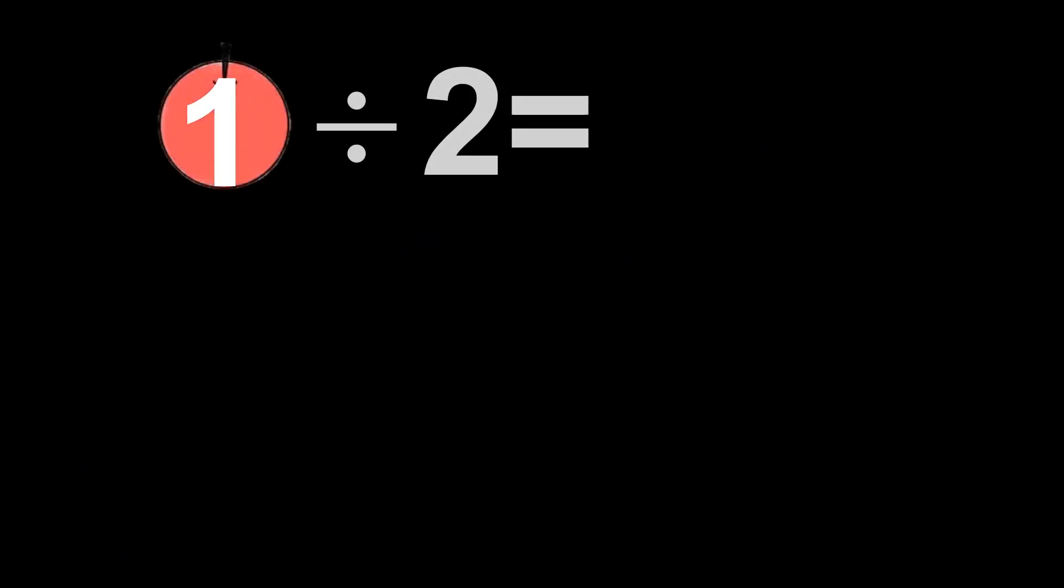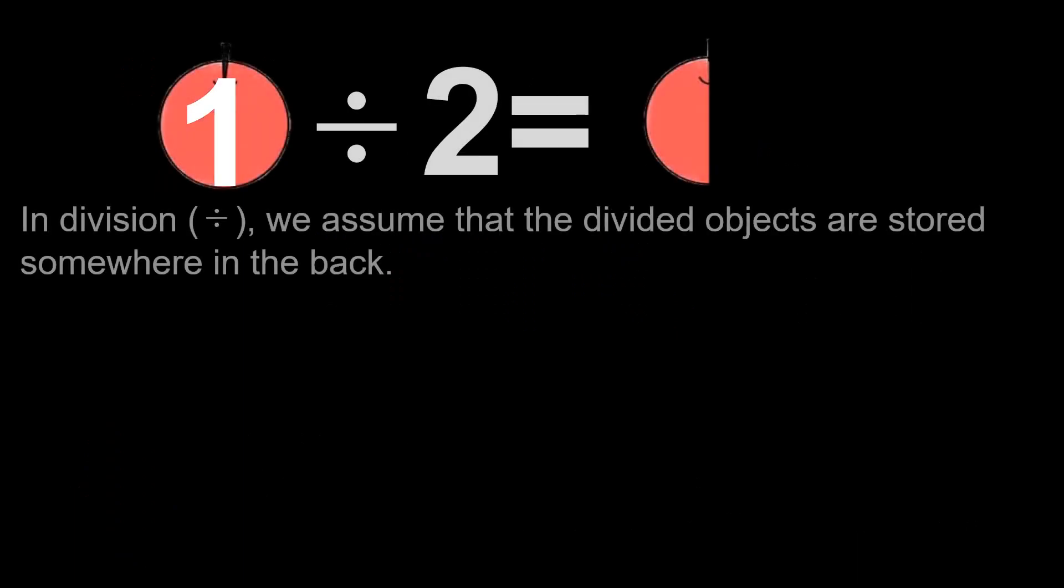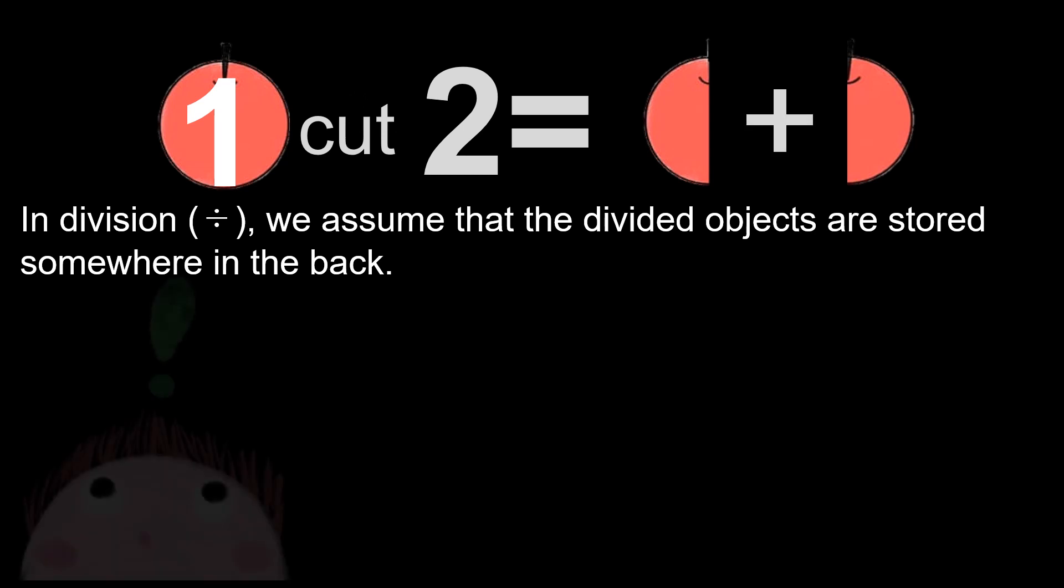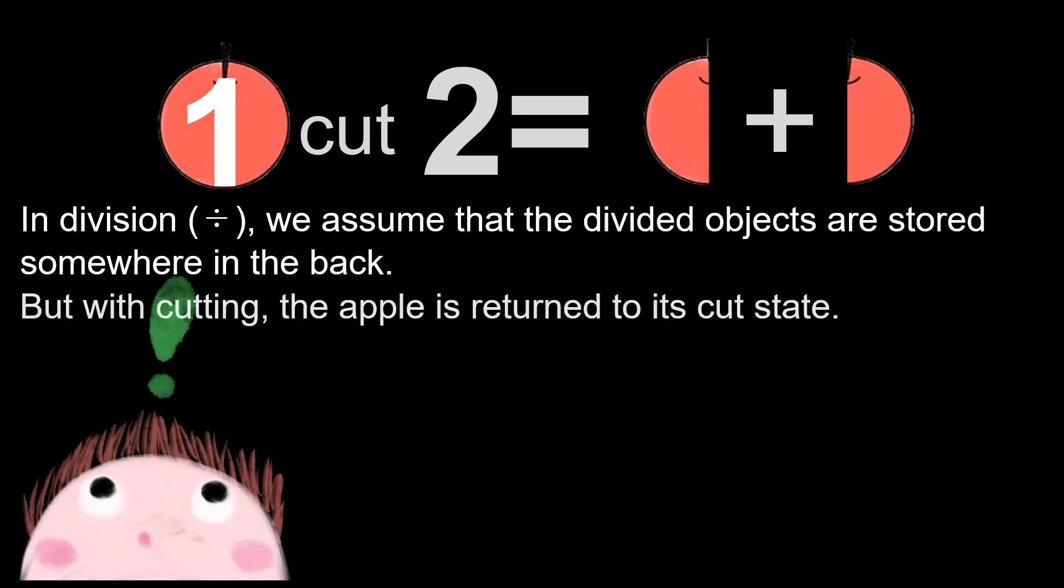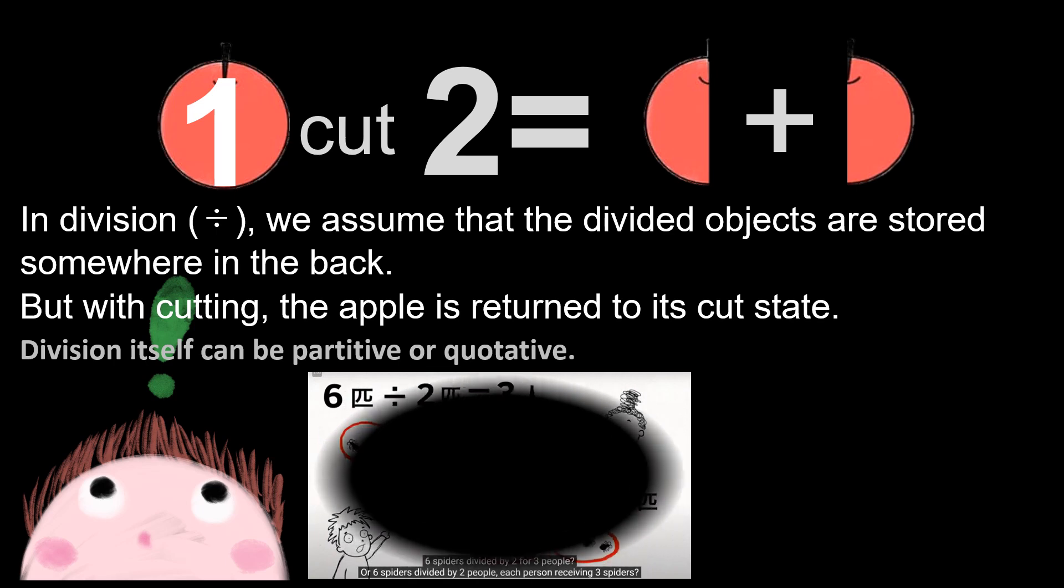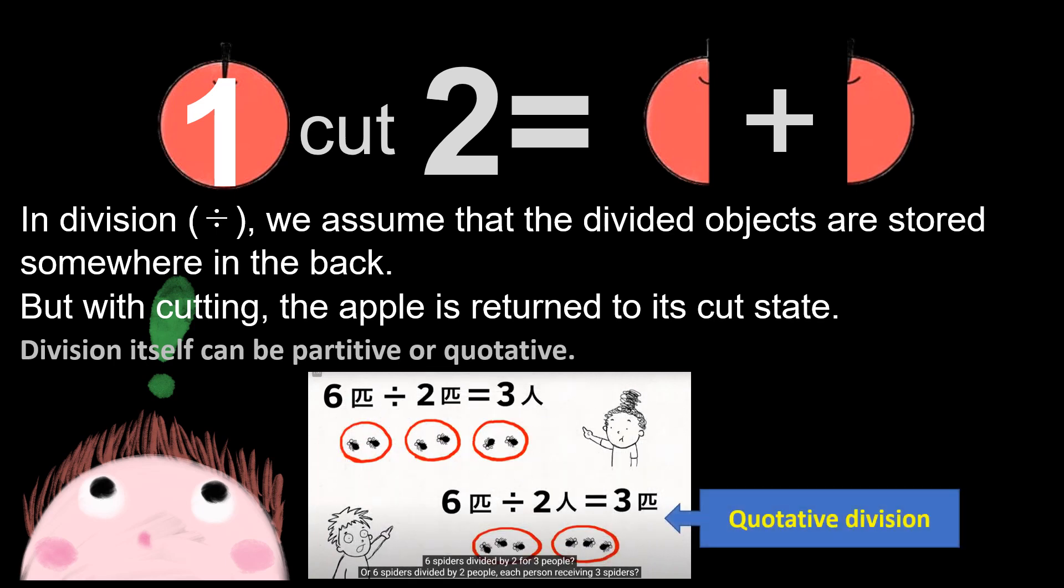1 divided by 2 is 0.5. In division, we assume that the divided objects are stored somewhere in the back. But with cutting, the apple is returned to its cut state. Division itself can be positive or quantitative.